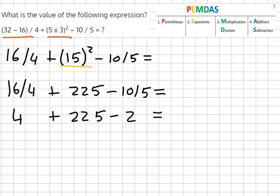And then it's simple addition and subtraction. 225 plus 4 equals 229 minus 2 equals our answer of 227.